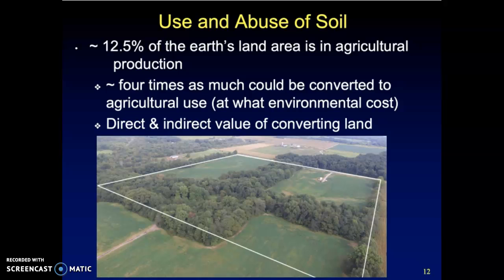Turning all the land on earth into farms and cities with nothing else is not something even to remotely consider. Biodiversity would be wiped out and we would destroy the ecosystem of our planet. So what we have to consider is the direct and indirect value of converting that land.